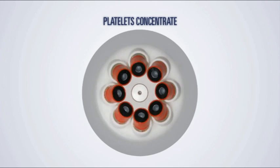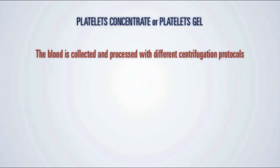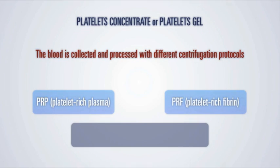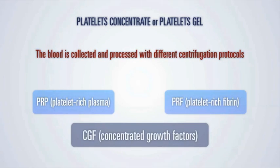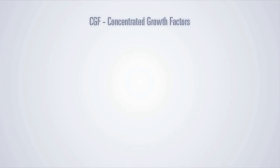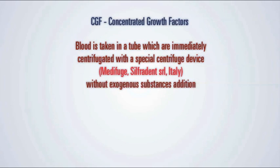Different types of blood and platelet concentrates are available, produced by centrifuging blood samples according to different centrifugation protocols: PRP (platelet-rich plasma), PRF (platelet-rich fibrin), and CGF (concentrated growth factors). CGF is produced from the patient's blood by a dedicated centrifuge device — the Medifuge by Silfradent, Italy — without the addition of exogenous substances.